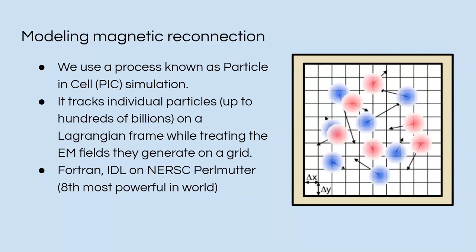So how do we model this? We use a process known as particle-in-cell simulation or PIC simulations. We track individual particles, so up to hundreds of billions of them, on a Lagrangian frame while we treat the electromagnetic fields they have on a grid. We use Fortran and IDL on the NERSC Perlmutter supercomputer to simulate this because we have so many particles to simulate.